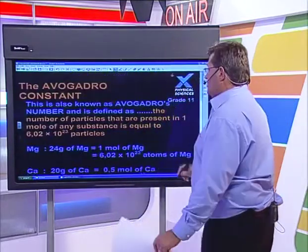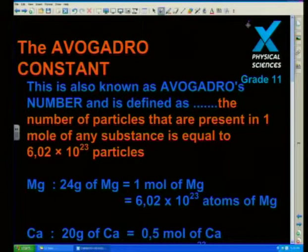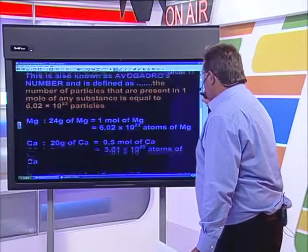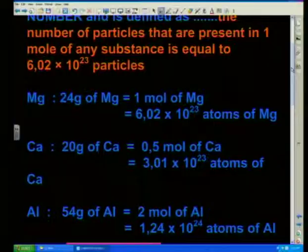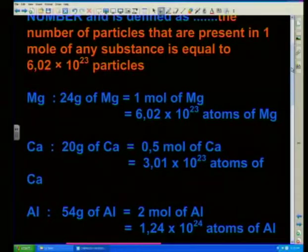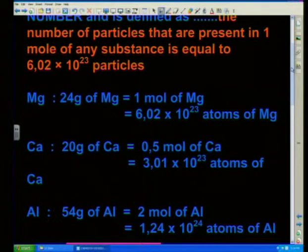What I want to look at quickly is the Avogadro constant. It's defined as the number of particles present in one mole of any substance, equal to 6.02 times 10 to the 23 particles. If I have certain masses of substance, those masses represent a certain number of moles, and we can also work out how many particles are present. If I've got 24 grams of magnesium, which is one mole of magnesium, that's equal to 6.02 times 10 to the 23 atoms of magnesium. We've got 20 grams of calcium - 20 grams is half a mole because one mole is actually 40.